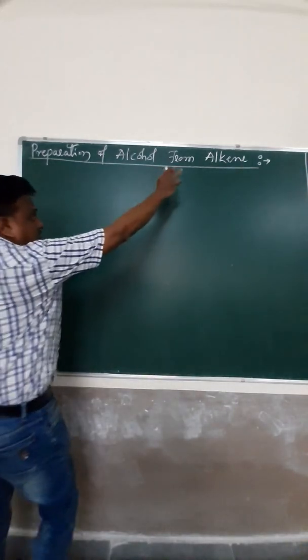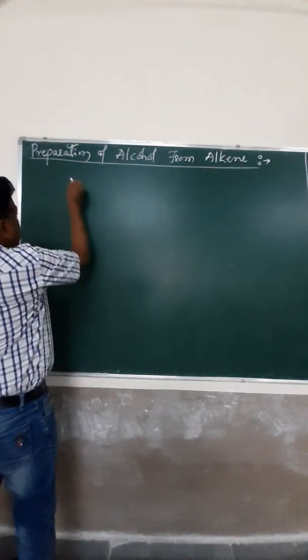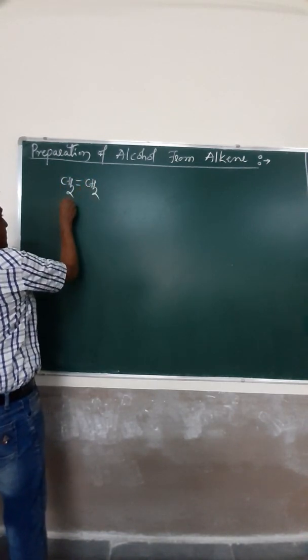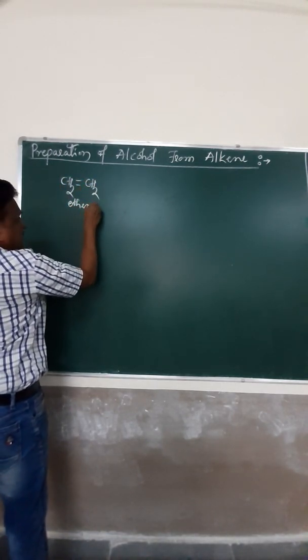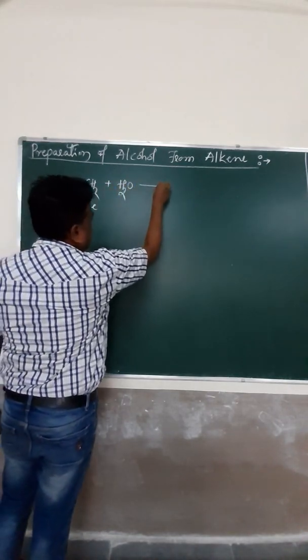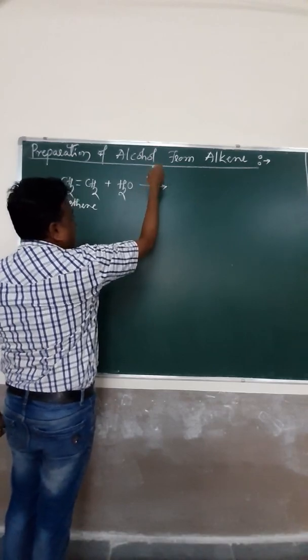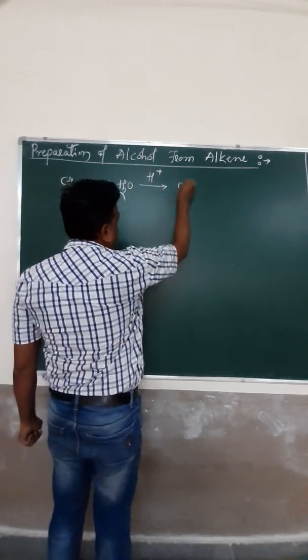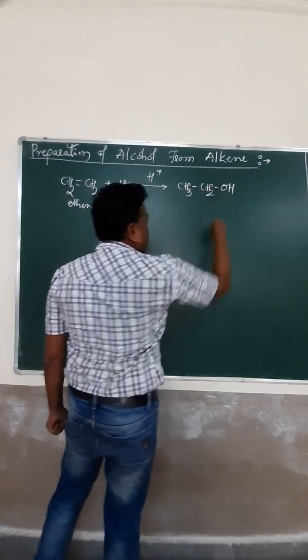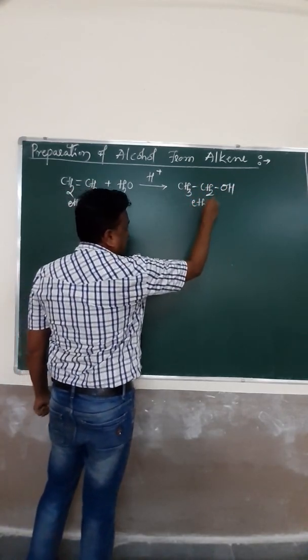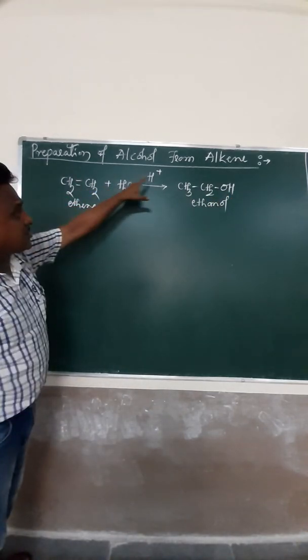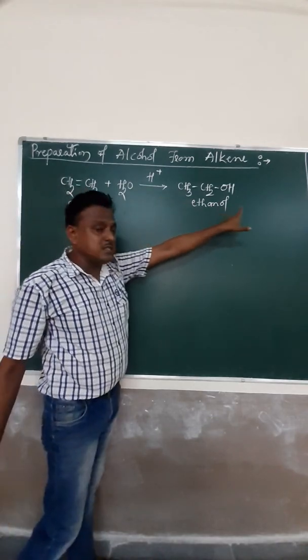We know already this preparation of alcohol from alkene in the last video. This is your compound ethene undergoes acid hydrolysis or catalyzed hydrolysis to form the product, an alcohol. The name of this compound is ethanol. When ethene undergoes acid hydrolysis to form the product is ethanol.